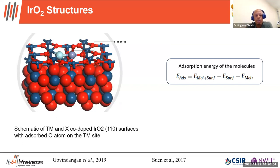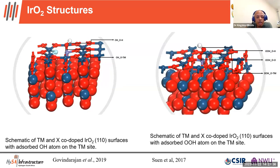We calculated the adsorption energies for oxygen, OH, and OOH on the surface. We then converted these to Gibbs free energies because computations are generally performed at zero Kelvin and must be converted to room temperature. The Gibbs free energy correction includes ZPE minus TS terms. The energy calculated from DFT plus our corrections gives the Gibbs free energy. The chemical potential of the proton-electron pair equals that of the gas phase, using the hydrogen molecule as a reference.